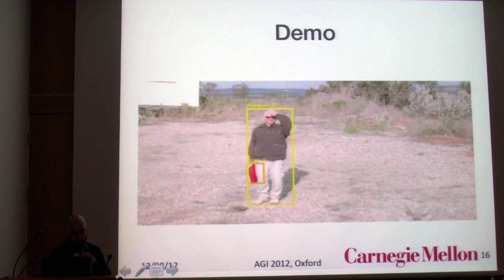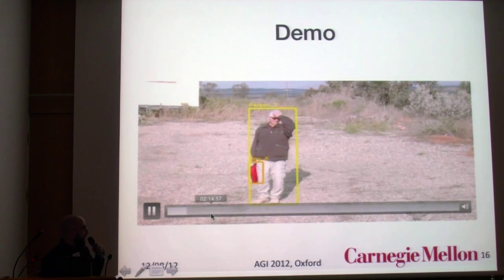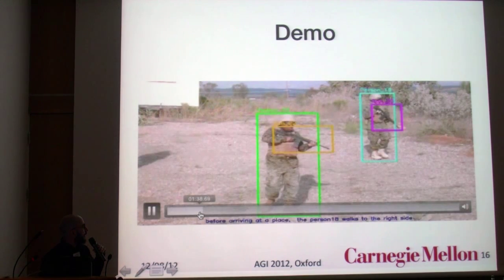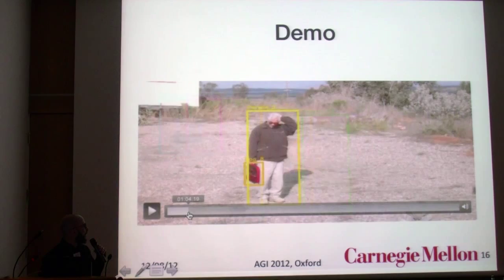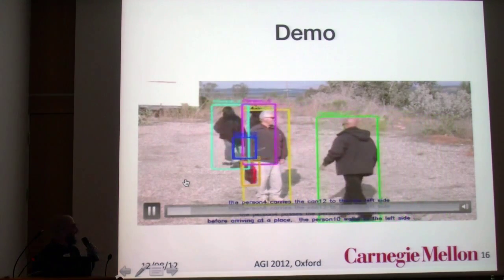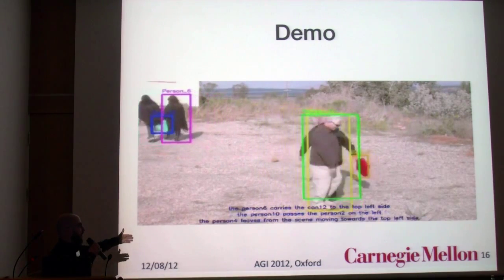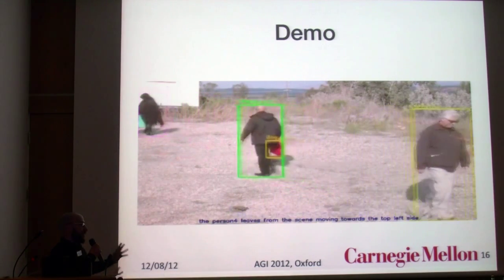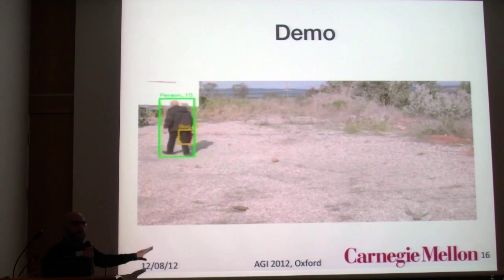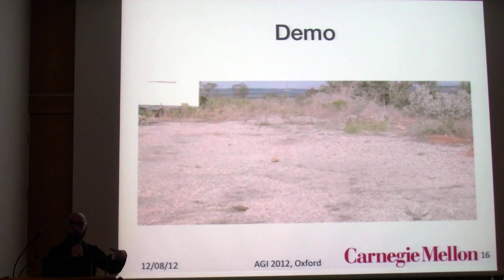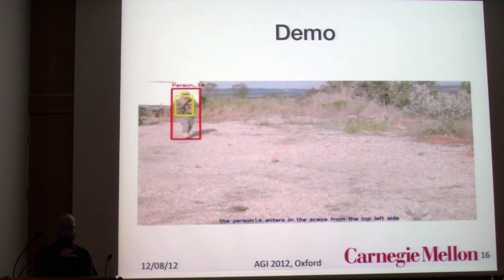At each point in time the system describes, like a captioning, what is going on in the video. We are trying to describe events in real time — real-time is not totally accurate because the computer vision pre-processing requires a lot of time, but the ACT-AR reasoning and generalization process is very fast, so it is almost real-time.